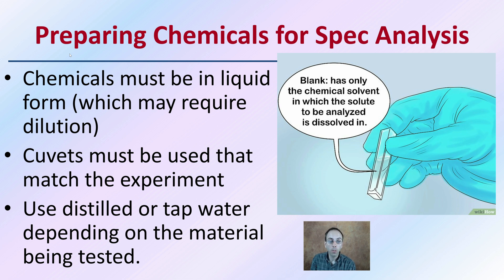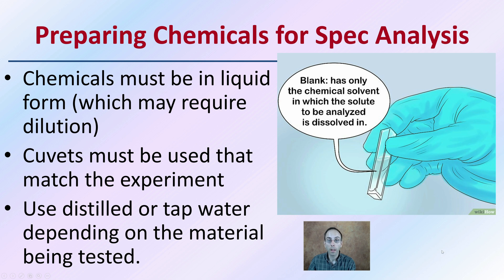Cuvettes must be used that match the experiment, and there are different types of cuvettes available. Use distilled or tap water depending on the material being tested. We often use the chemical solvent as what we call a blank — a cuvette that simply contains the chemical solvent in which the sample is dissolved — and this allows for correction of any potential data noise.